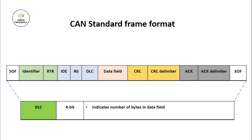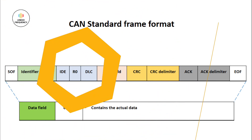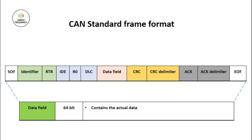DLC stands for Data Length Code and is 4 bits. The total number of bytes in the data field is indicated by the DLC. The Data field is 64 bits and contains the actual data that is to be transmitted.